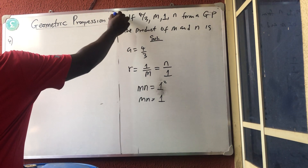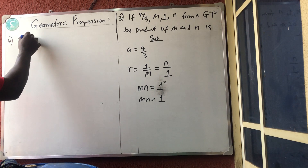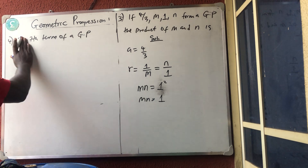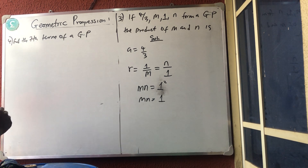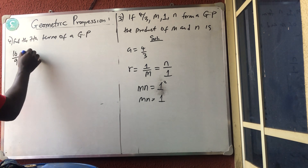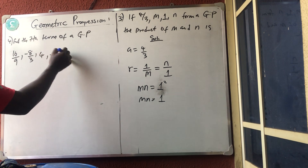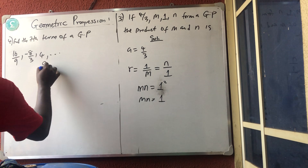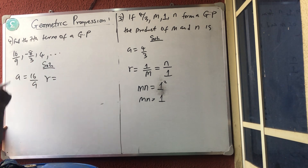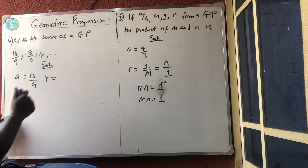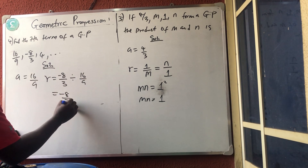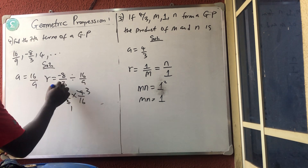Number four: find the seventh term of the GP 16/9, −8/3, 4, ... Solution: the first term a = 16/9. The common ratio r = (−8/3) ÷ (16/9) = (−8/3) × (9/16). Simplifying: 3 goes into 3 once, 3 goes into 9 three times, 16 goes into 16 once, giving r = −3/2.